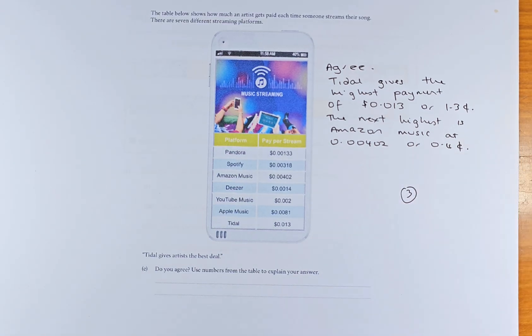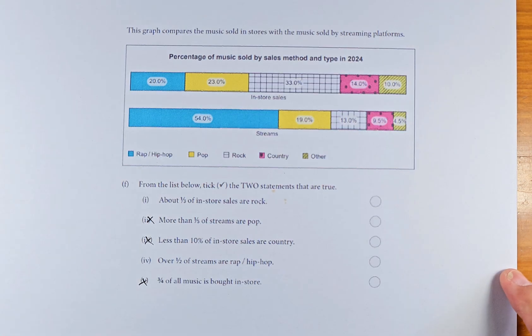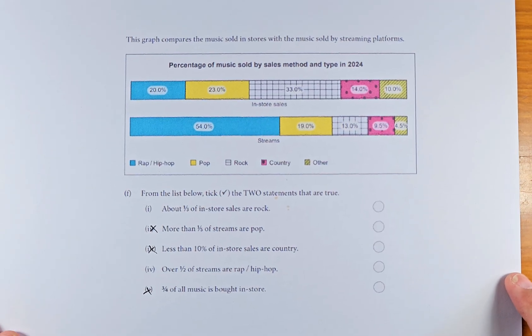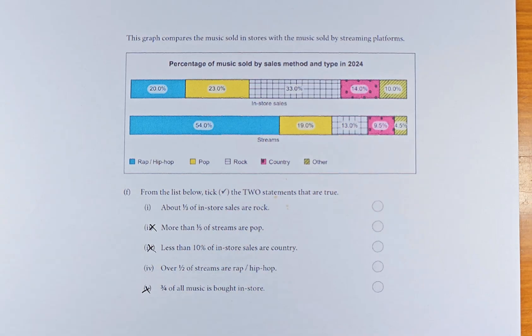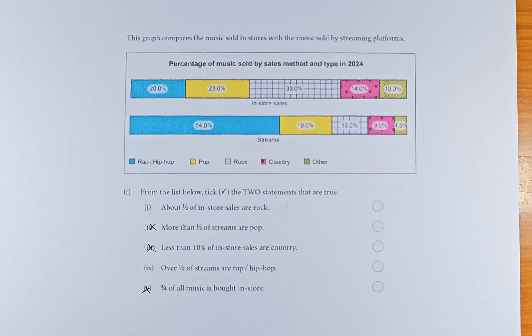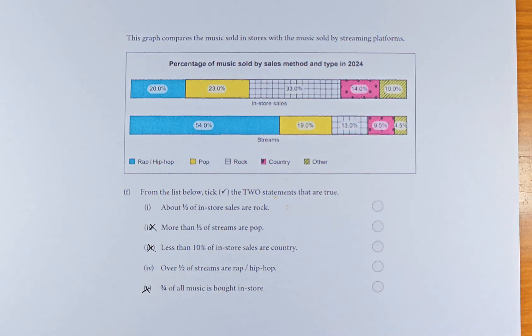And we shall look at the last question. So that is the last of the question. So now we're going to answer this. From the list below, there are two. The graph compares the music sold in the stores with the music sold by the streaming platform. The first one is in-store sales by different genre and the streams by different genre.